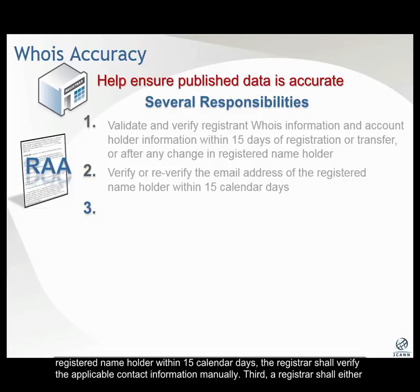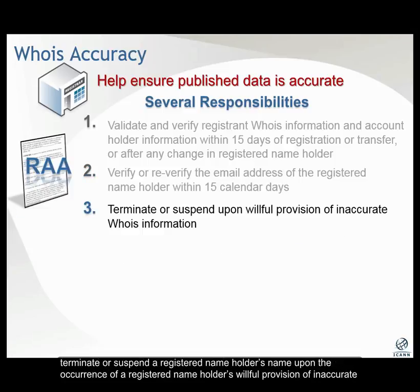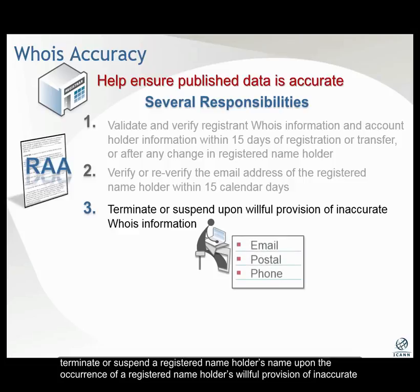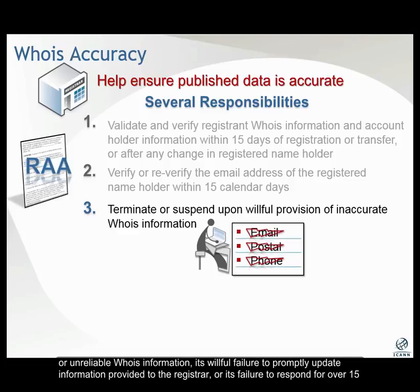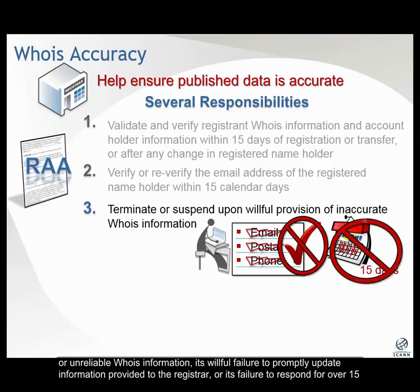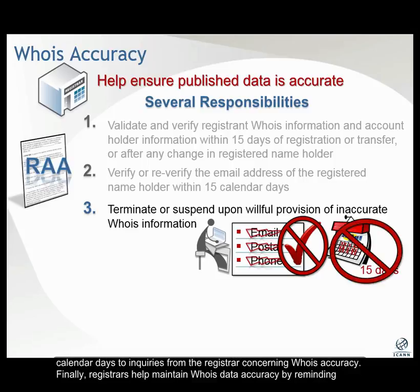Third, a registrar shall either terminate or suspend a registered name holder upon the occurrence of a registered name holder's willful provision of inaccurate or unreliable WHOIS information, its willful failure to promptly update information provided to the registrar, or its failure to respond for over 15 calendar days to inquiries from the registrar concerning WHOIS accuracy.